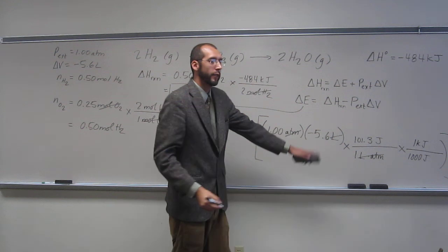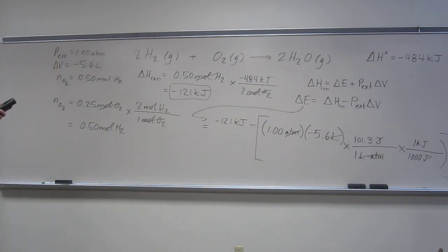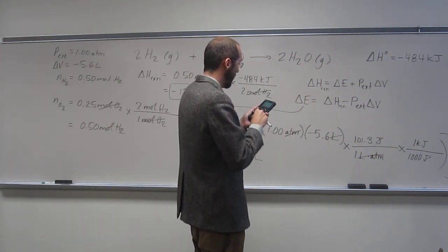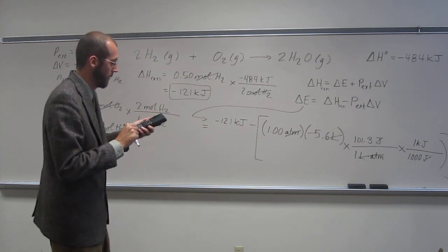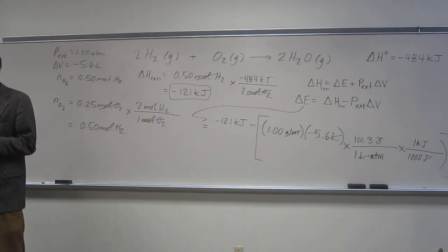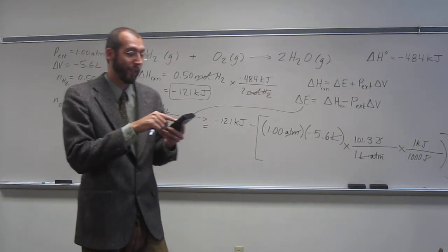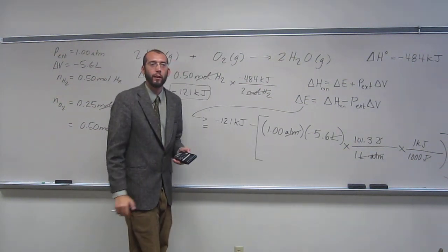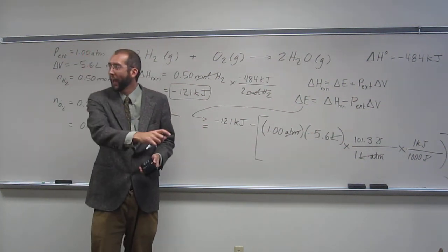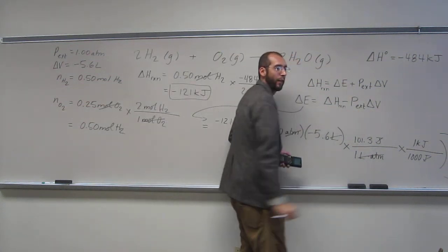That's why I did those big brackets. Cancel, cancel, and now we're in the right units. So 1 times negative 5.6 times 101.3 divided by 1,000. So notice, how many kilojoules is that? So negative .567, right? Is that a big or small number relative to 121? Tiny, right? So that factor doesn't play a huge role. Remember we were talking about that earlier? How much of a role the PV term actually plays? Very tiny role.